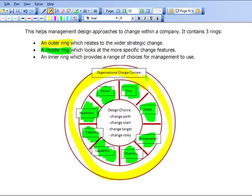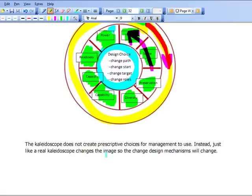If you imagine these rings, the outer and the middle one, if they're changing, going in different directions like a kaleidoscope does, then what we will have in the middle will be various design choices which will change depending on the context from the outer ring and the issues on the middle ring. In other words, what Balogun and Hope Hailey were saying is: with any change issues, we need to look through it like a kaleidoscope, and there will be a different image on it at different times, and that will determine what is going to be the best approach.